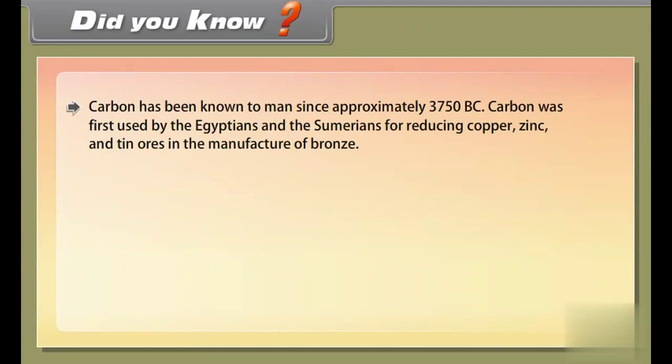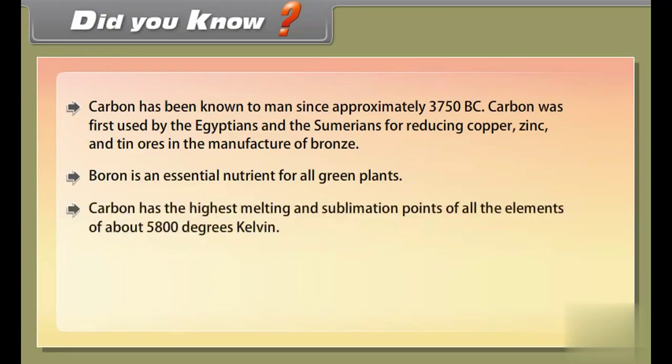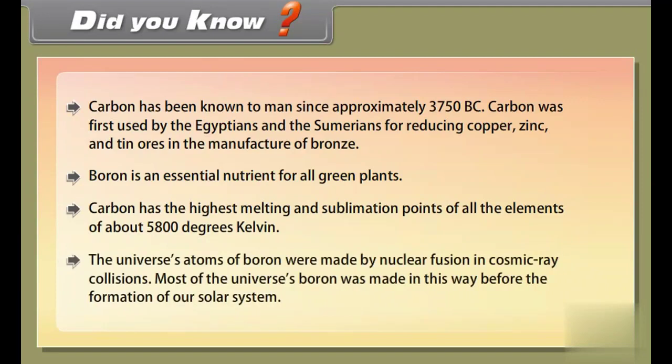Did you know? Carbon has been known to man since approximately 3750 BC. Carbon was first used by the Egyptians and the Sumerians for reducing copper, zinc and tin ores in the manufacture of bronze. Boron is an essential nutrient for all green plants. Carbon has the highest melting and sublimation points of all the elements of about 5800 degrees Kelvin. The universe's atoms of boron were made by nuclear fusion in cosmic ray collisions. Most of the universe's boron was made in this way before the formation of our solar system.